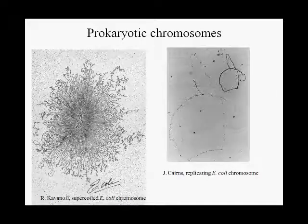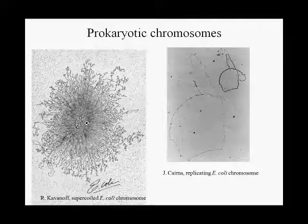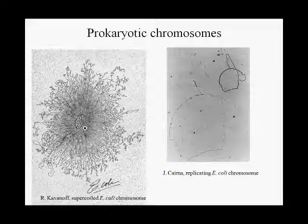We'll begin with prokaryotic chromosomes. This figure on the left shows an E. coli cell that was fairly gently lysed, liberating almost an intact nucleoid. All of these fibers are actually the single DNA molecule — a single circular DNA molecule in the E. coli cell. You can sort of see in the middle that there might be some proteinaceous scaffold holding all of this tangle of DNA together.